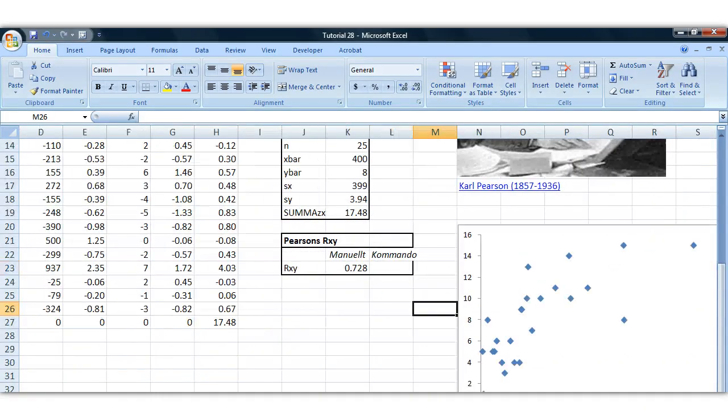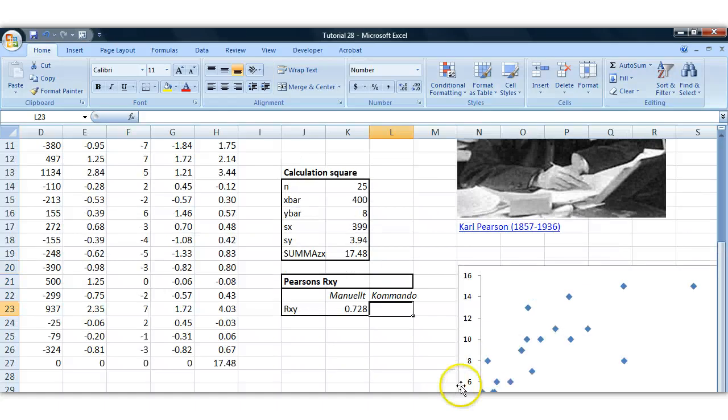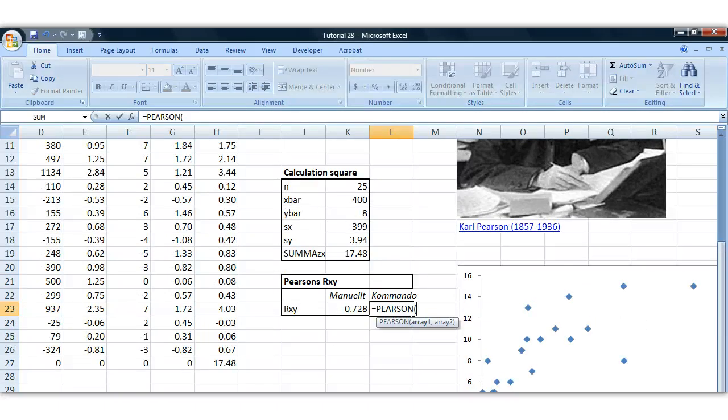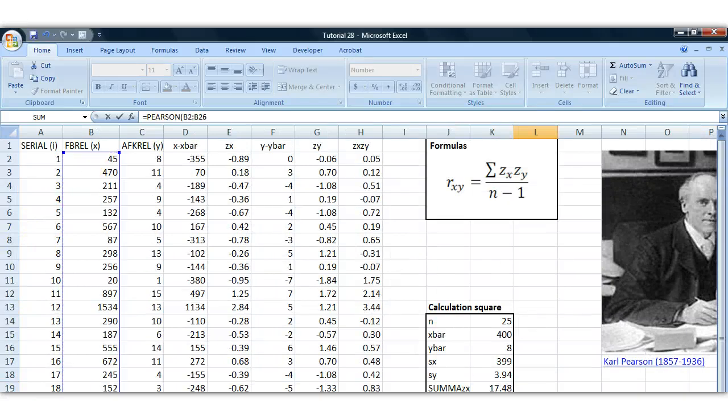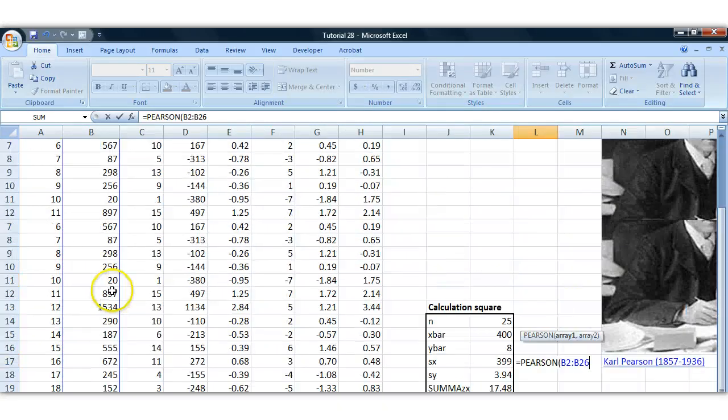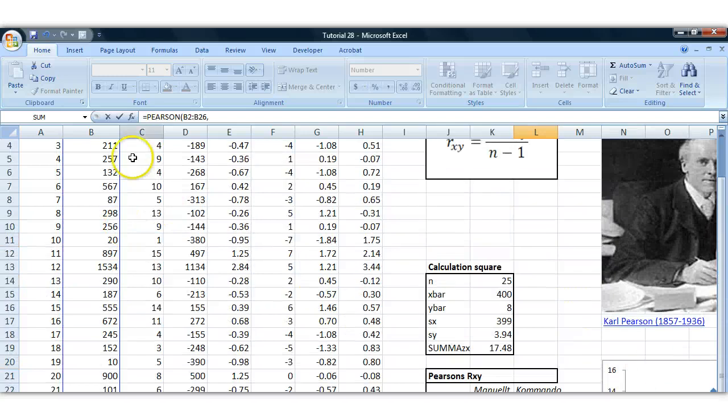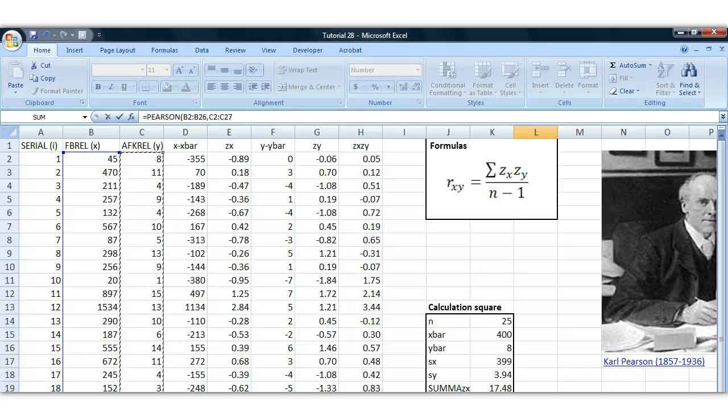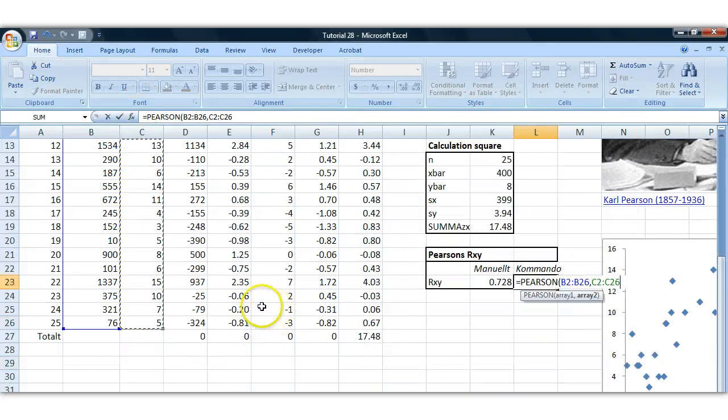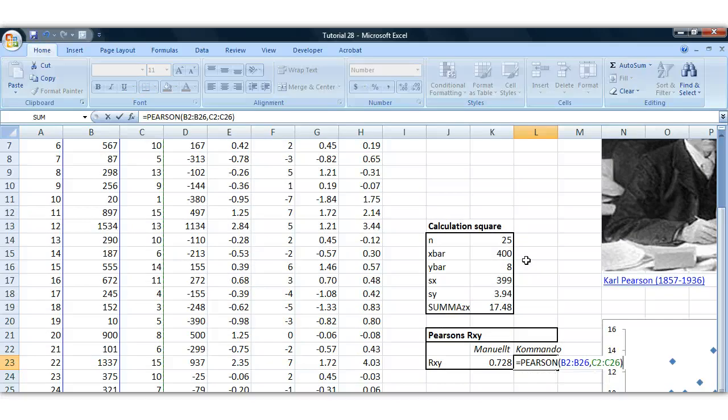Now, if I did this using an Excel command, it's called Pearson. And then you mark your first variable, which is going to be the x variable. Our independent variable first. And then you mark your dependent variable, which is going to be y, AFK relationships, in our case. And we check, yes, we did it right. We got the same result.